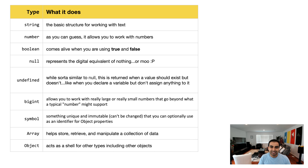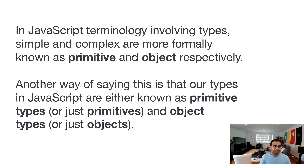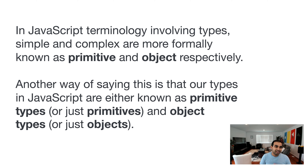In JavaScript terminology involving types, simple and complex are not exactly used. Instead, we use the more formal names primitive and object. In JavaScript, a simple ingredient would be considered a primitive type, and a more complex ingredient would be known as an object type — or just primitives and objects if you want to skip the word type.